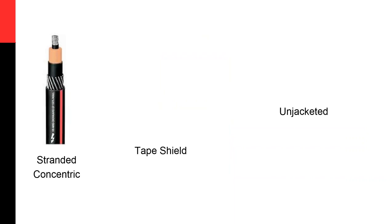Looking at different types of neutrals: you have a stranded neutral — separate wires — then a tape shield in the middle, which is literally a tape instead of wires. And then there is the unjacketed cable, which is a problem: the neutral is exposed to the elements because there is no jacket around it. The neutral can actually corrode away — literally eaten away by chemical reactions in the soil — and that can cause problems with certain fault location methods.